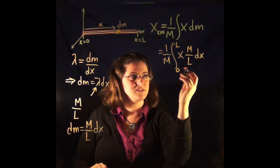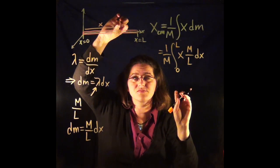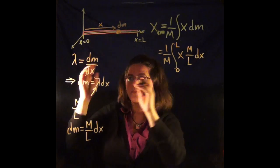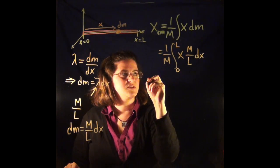Okay, I can take out the constants. X is not a constant. It changes with the little place where I'm measuring dm. That means it goes all the way along the rod.